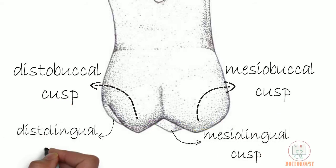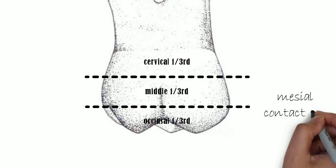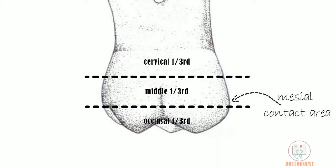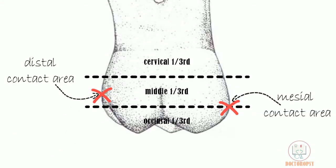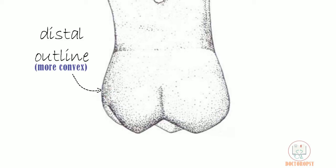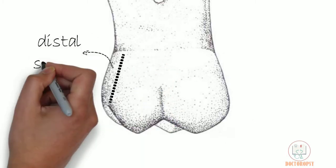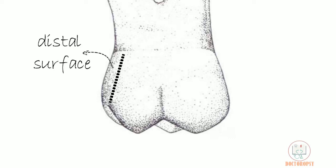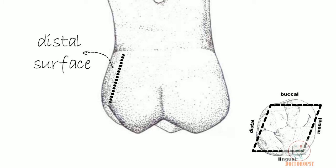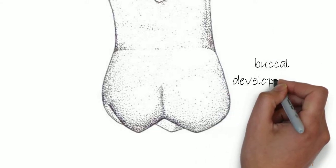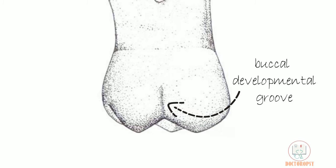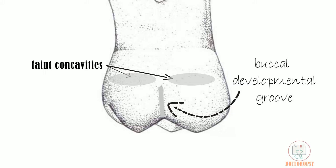Parts of the lingual cusps — mesiolingual and distolingual — are also seen. The mesial contact area, by which the tooth contacts the second premolar, is approximately at the junction of the occlusal third and middle third, whereas the distal contact area by which the tooth contacts the second molar is at the middle of the middle third. The distal outline of the crown is more convex than the mesial outline. From the buccal aspect, more of the distal surface is visible than the mesial surface because the crown from the occlusal aspect is rhomboidal in shape, in which the distobuccal line angle is obtuse, making the distal surface visible. The cervical line is irregular or slightly convex towards the root. A buccal developmental groove is seen in the middle of the buccal surface between the two cusps, running cervically and terminating halfway from the cervical line. Faint concavities are seen lateral to the terminus of the groove running in proximal directions.